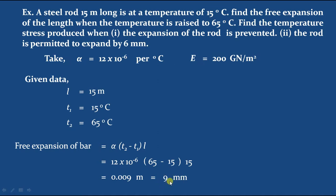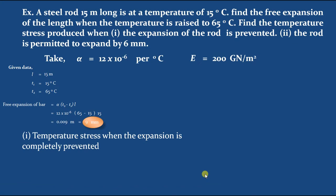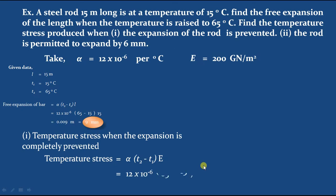Total expansion of 9 mm is possible for the given steel rod when temperature increases to 65 degrees centigrade. For the first case, when this expansion is completely prevented, temperature stress = alpha into (T2 minus T1) into E. Substituting: 12 into 10 power minus 6, into (65 minus 15), into 200 into 10 power 9. Calculating gives 120 into 10 power 6 Newton per meter square, which is 120 megapascals. This is the temperature stress when expansion is completely prevented.